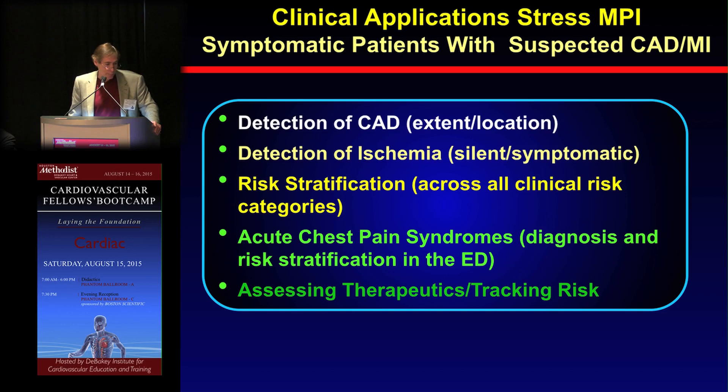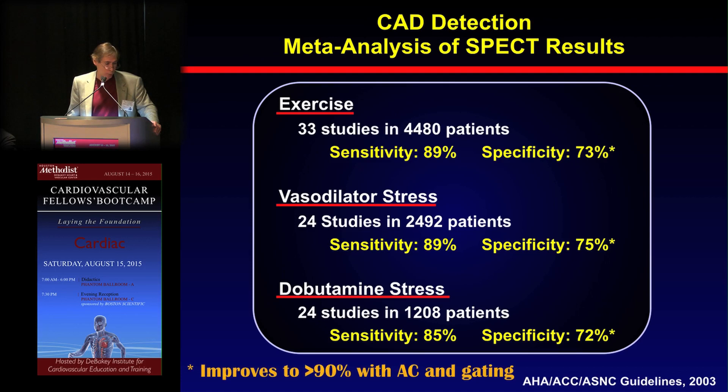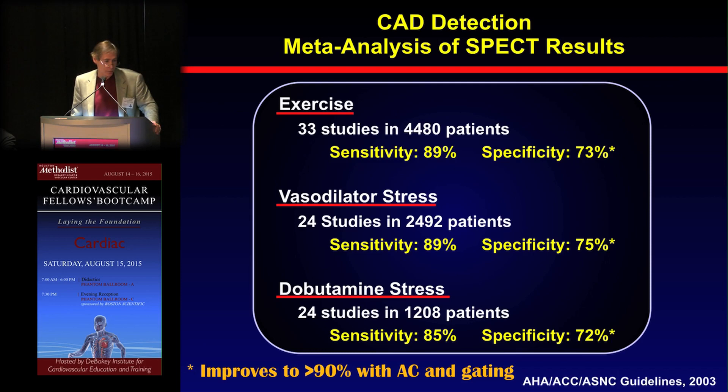We can also assess therapeutics and track risk. Looking at meta-analysis of SPECT results, irrespective of the stressor used — whether exercise, vasodilator stress, or dobutamine — sensitivity is relatively good, around 90%, with specificity around 75%. But with the use of attenuation correction, which accounts for artifacts, and gating of the images, we can get over 90% specificity. So we have about 90% sensitivity and about 90% specificity for detecting disease.